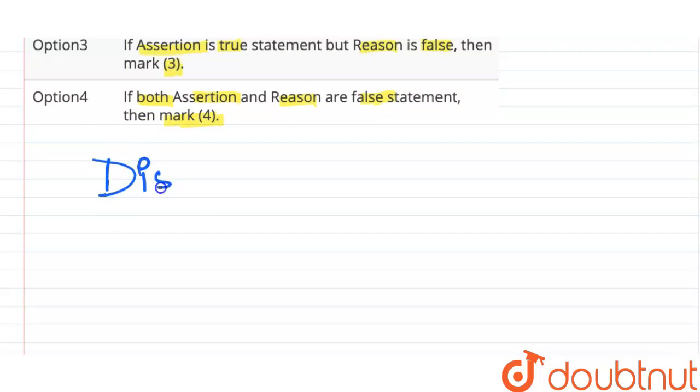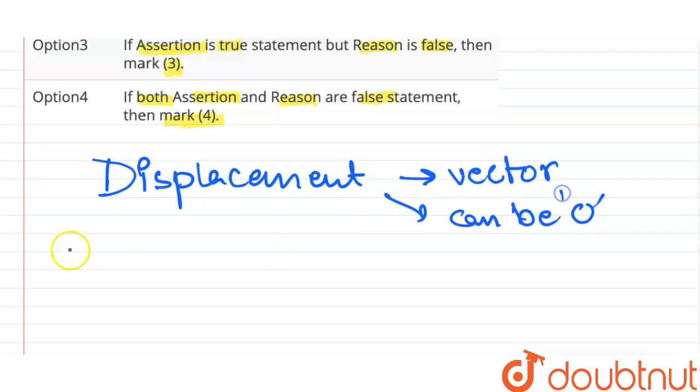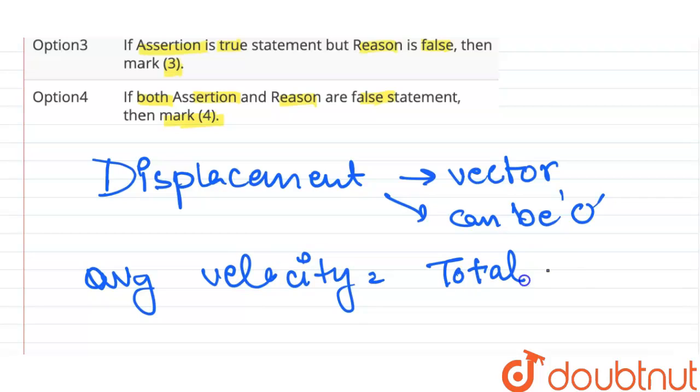Alright. Why? Because displacement is vector quantity. It can be zero for a moving body and average velocity is total displacement upon total time.